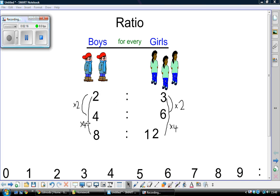Next, we multiplied the original ratio by four. Eight boys for every twelve girls. We know it's the same because we've multiplied both the original ratio numbers by four.